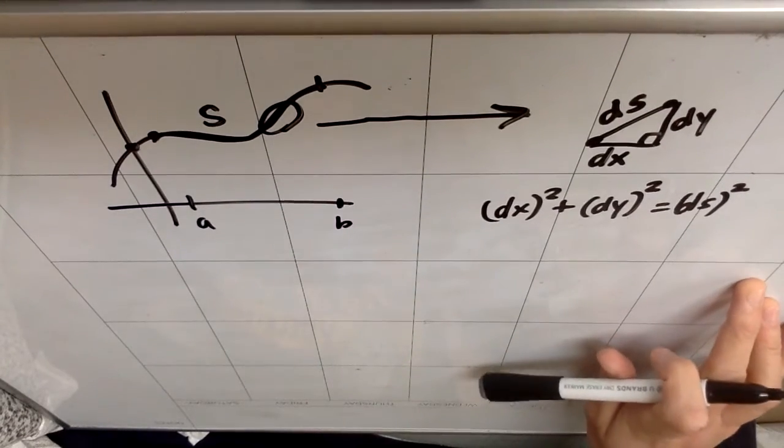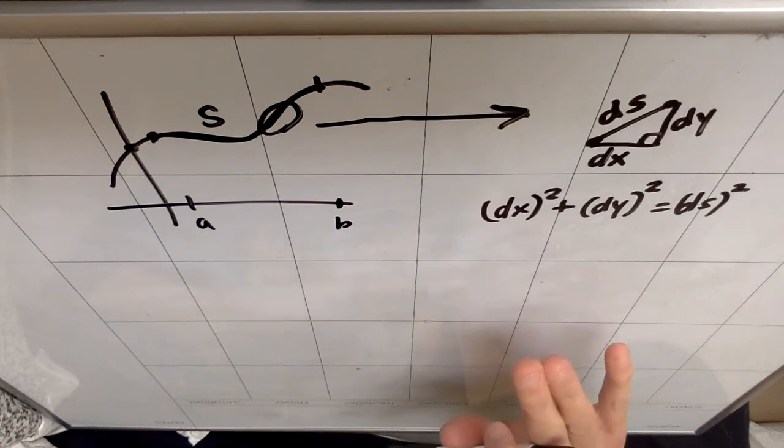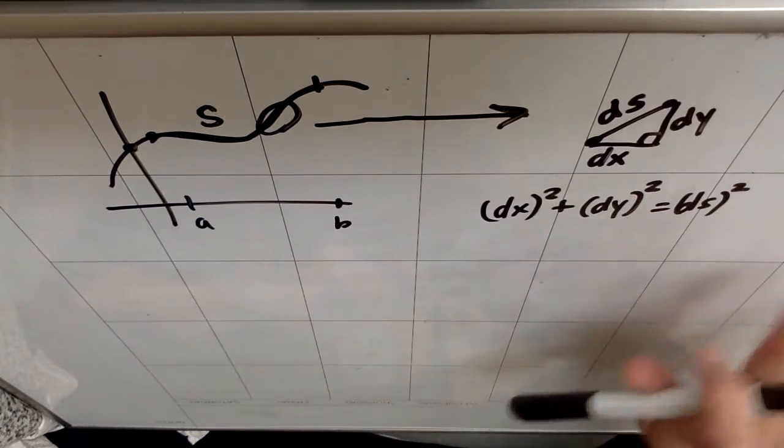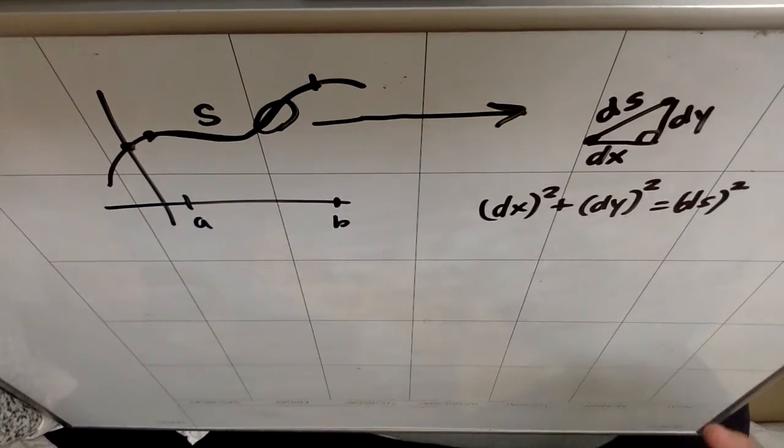When we did arc length before, we just didn't do it with respect to t. The only difference here is that if I chose to, I could write this entire equation in terms of over dt squared.